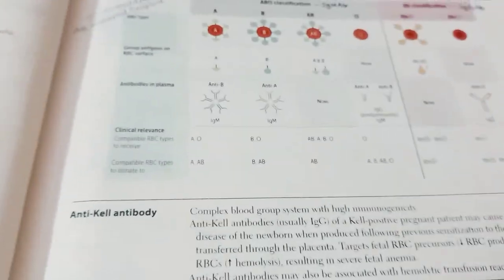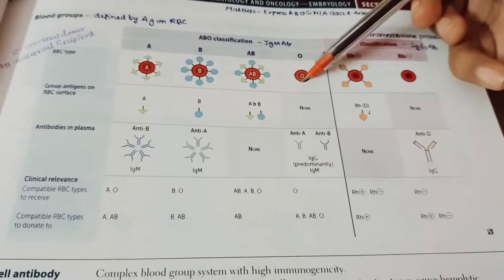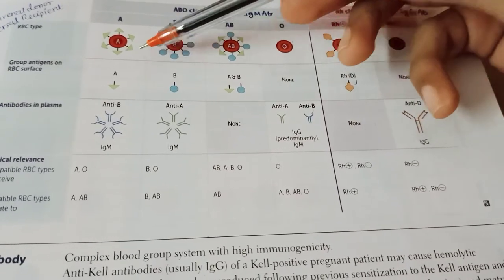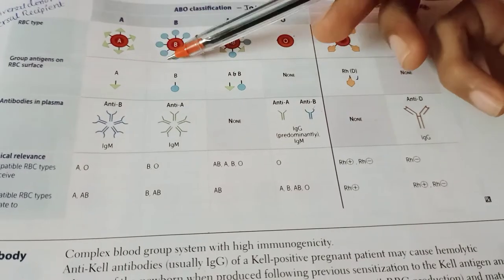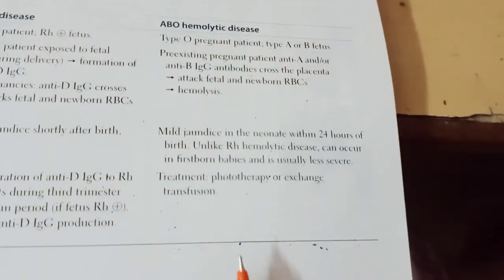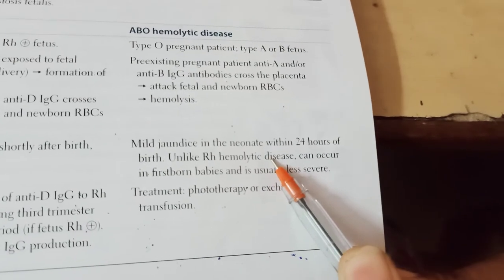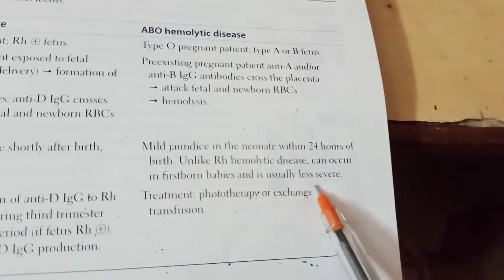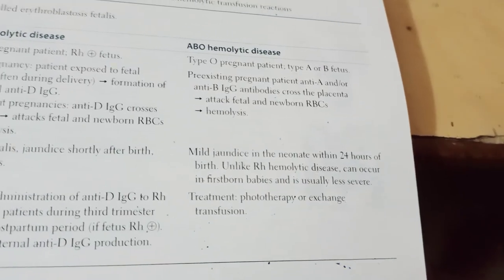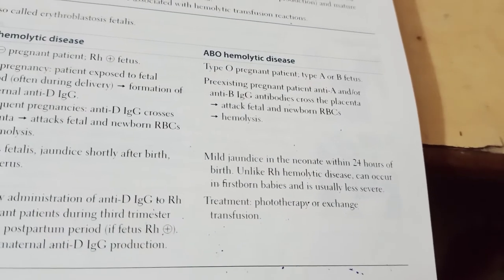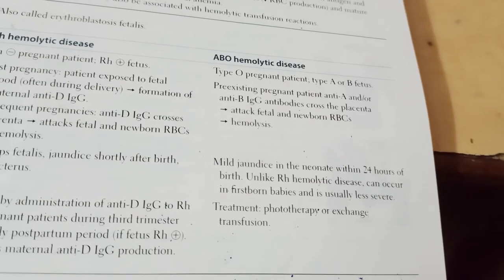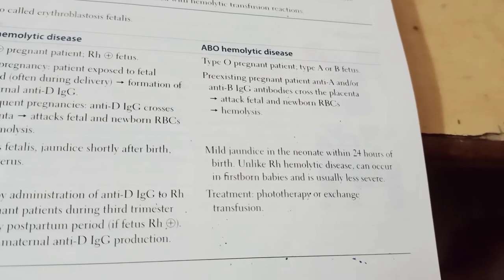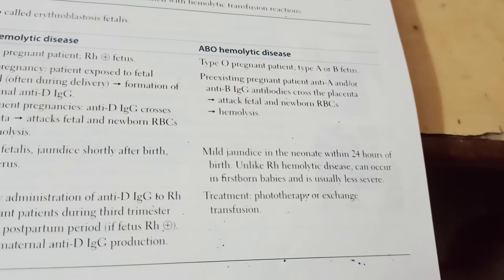In ABO hemolytic disease, the mother is type O and the fetus is type A or B. The mother already has pre-existing anti-A and anti-B IgG antibodies that cross the placenta and attack fetal RBCs, causing hemolysis. The baby may have mild jaundice within 24 hours of birth. Unlike Rh hemolytic disease, ABO hemolytic disease can occur in firstborn babies because the mother already has the antibodies. Treatment is phototherapy or exchange transfusion.